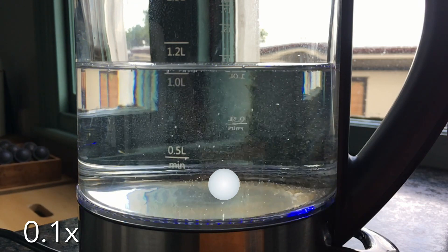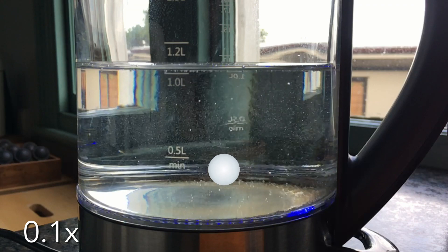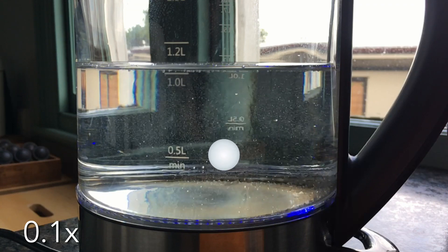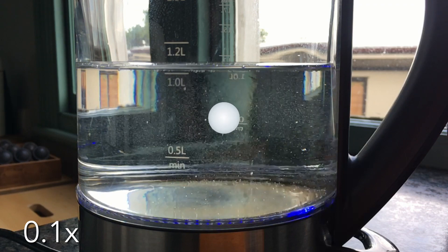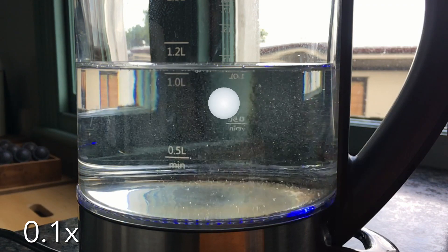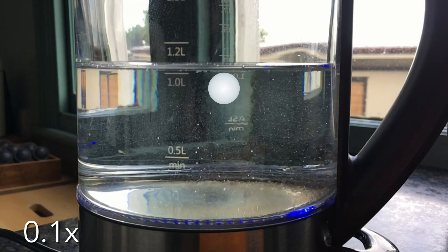But as they rise, they transfer some of their energy back to the surrounding water. As the bubble cools back down to less than 100 degrees Celsius, the water vapor changes back into liquid water, and so the bubble very suddenly implodes.